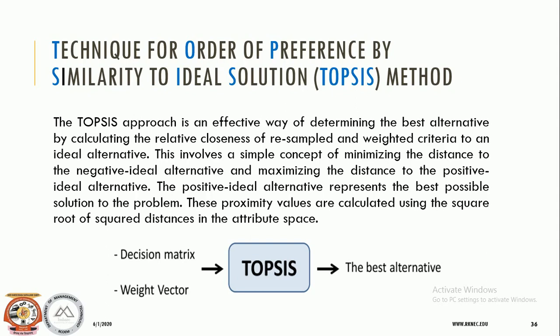TOPSIS is based on the concept that the chosen alternative should have the strongest geometrical distance from the positive ideal solution and the longest geometric distance from the negative ideal solution. We consider that an ideal solution exists, and in the TOPSIS method we calculate the geometric distance from that ideal solution — both from the positive as well as the negative side. The method of selection of alternatives is based on this actual geometric distance, called the closeness coefficient.